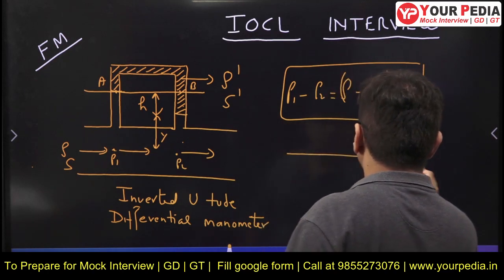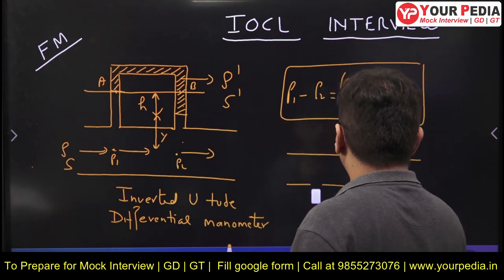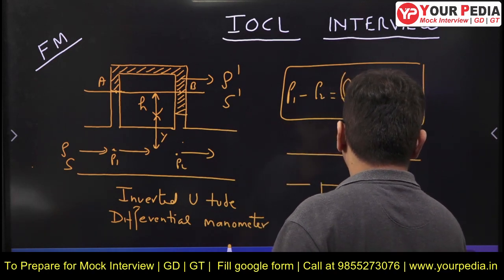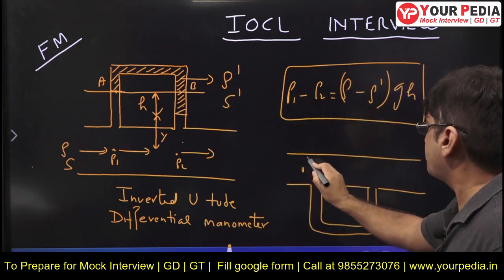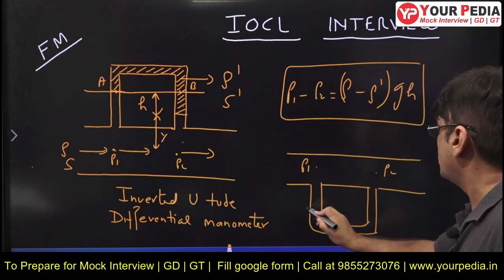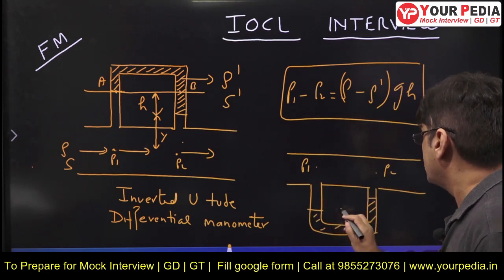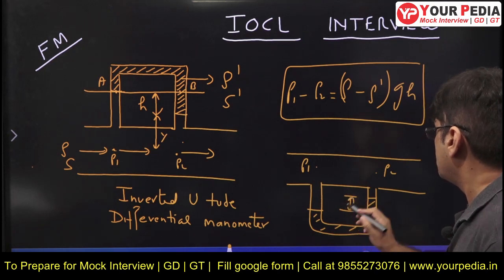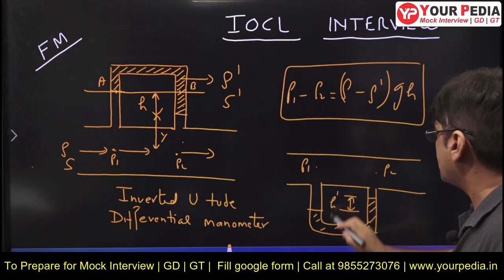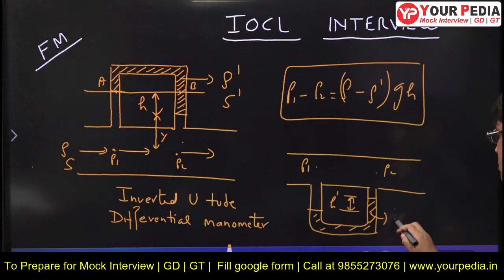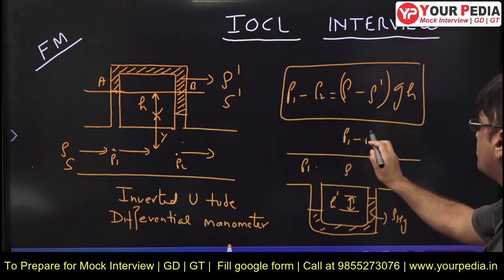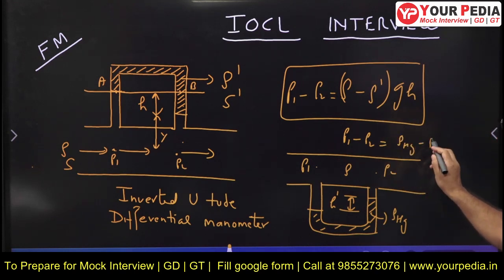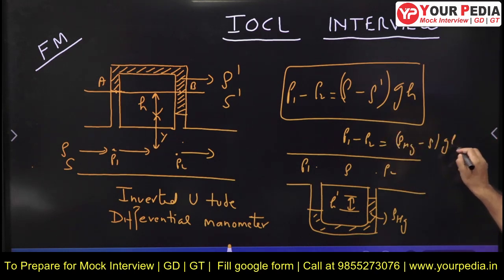Now let us look at the U-tube manometer diagram. In a U-tube manometer with pressures P1 and P2 on either side, the manometric liquid is mercury (density rho_mercury). The formula for pressure difference here is: P1 minus P2 equals (rho_mercury minus rho) times g times H_dash.